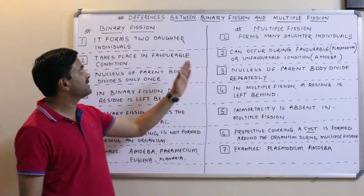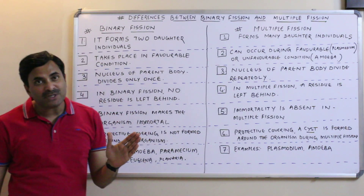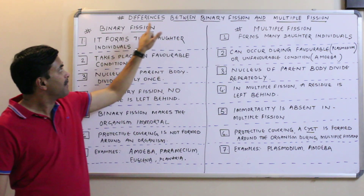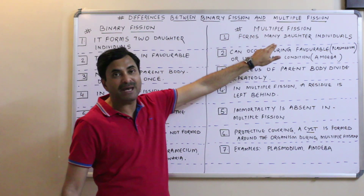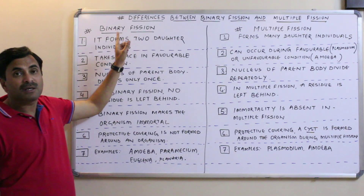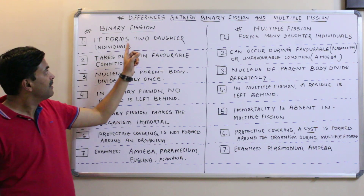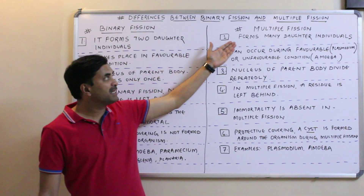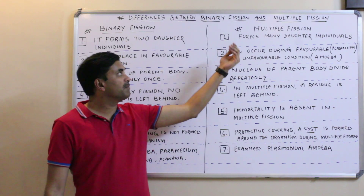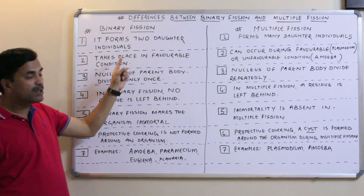Today we are going to discuss the differences between binary fission and multiple fission. The first thing to study is why it is called binary and why it is called multiple. Binary means two and multiple means many. In binary fission, the parent organism divides into two daughter individuals, while in multiple fission, the parent organism forms many daughter individuals.